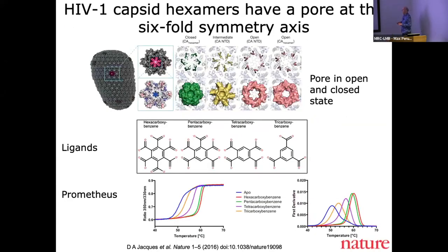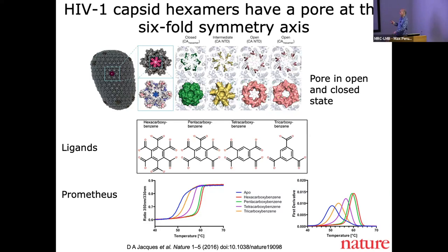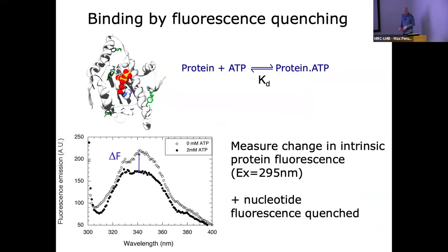Here's an example using this technique in James's group. They had this HIV capsid protein and found a pore in the centre. It seems to be in an open and closed state, and it was quite charged in the centre. Their idea was to block this pore using substituted hydroxybenzenes, with different amounts of substituents. What they could see is that as you add more substituents - five, six, seven - you increase the melting temperature, meaning more cross-linking of the pore.